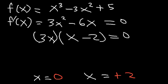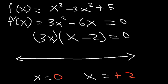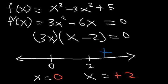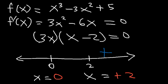Now put the critical numbers 0 and 2 on a number line to create a sign chart. Plug in a number greater than 2, say 3: (3-2) is positive and 3×3 is positive, so the first derivative is positive there. Plug in 1 (between 0 and 2): (1-2) is negative and 3×1 is positive — negative times positive gives a negative result. Plug in -1: (-1-2) is negative and 3×(-1) is negative — two negatives multiply to give a positive result.